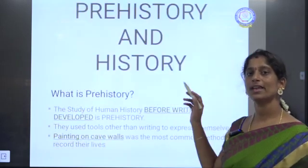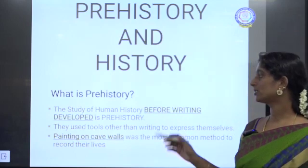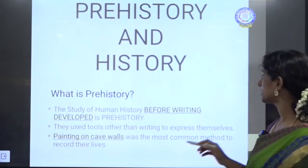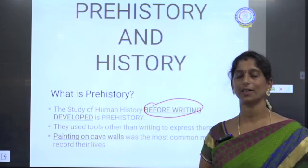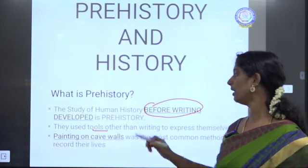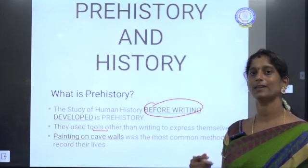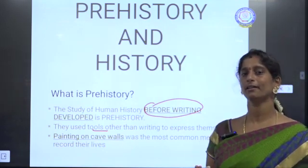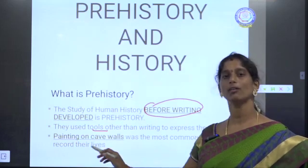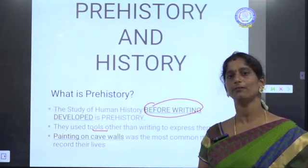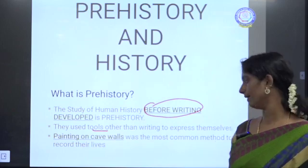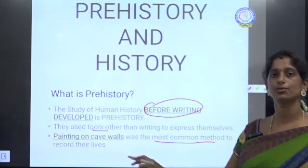There are two different terms: Prehistory and History. Prehistory is the study of human history even before writing was developed. Before writing developed, there was a period called the prehistorical period. People in that period used tools other than writing to express themselves. They did not know about writing, so they used many other tools — one such tool was painting on cave walls. When they were traveling from place to place for food and shelter, they used to paint on cave walls wherever they stayed. That was the most common method to record their lives.